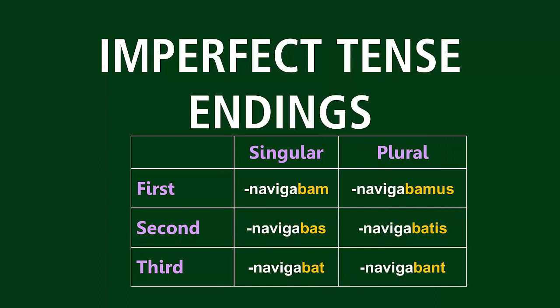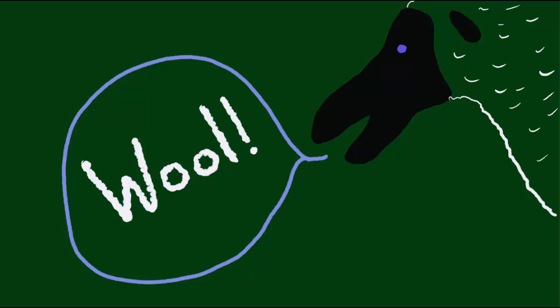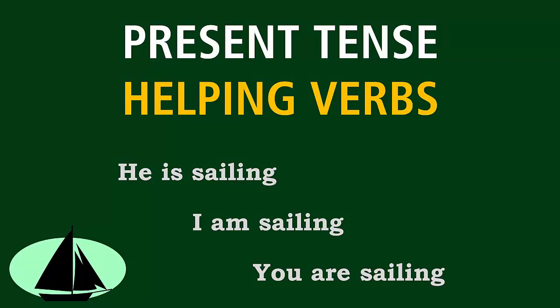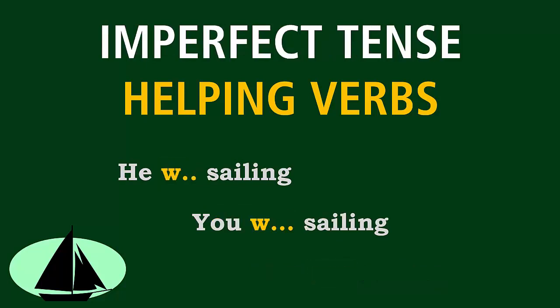But how do you translate these endings? In order to figure that out, we'll have to talk a little bit more about sheep. What does sheep have that most animals do not have? Wool! Yes, sheep have wool. For each Latin tense, you are going to use a particular English helping verb to translate it correctly. For the present tense, you used IS, AM, ARE. For the imperfect tense, you're going to use a helping verb that begins with W — like wool.